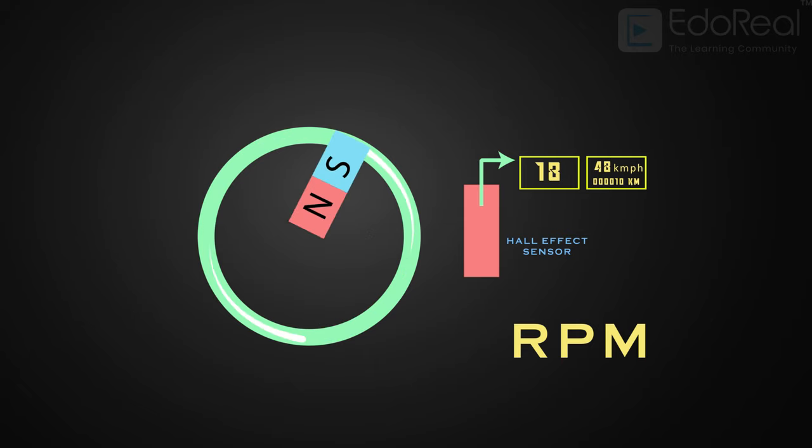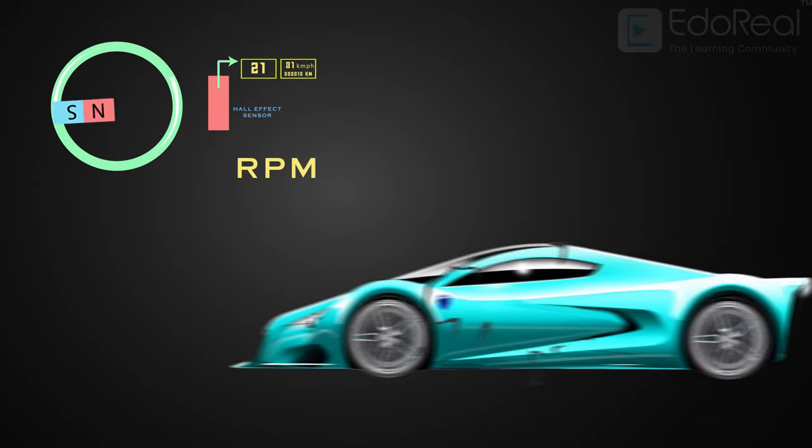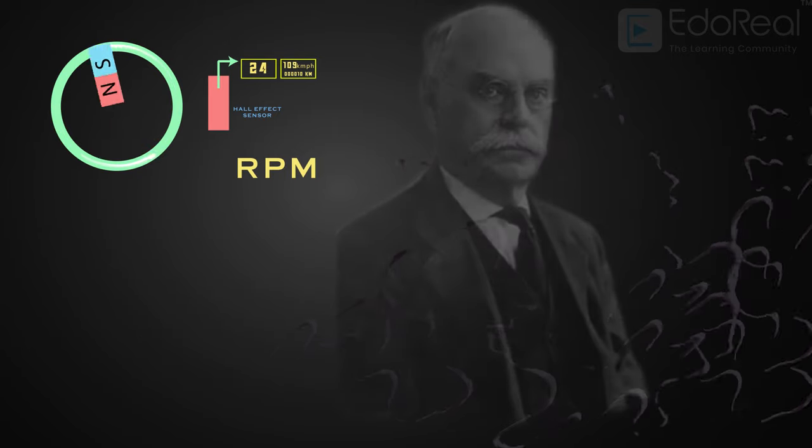When the magnets are away from the sensor, the magnetic field is recorded as zero, and when the magnet passes by the sensor, it calculates the magnetic field. This sensor phenomenon is used in numerous applications in cars. This calculation of the static magnetic field is a clever bit of science discovered in 1879 by American physicist Edwin H. Hall.